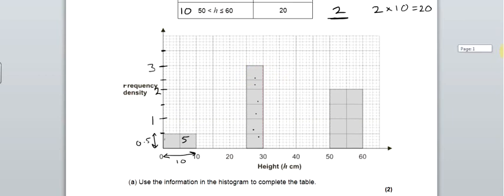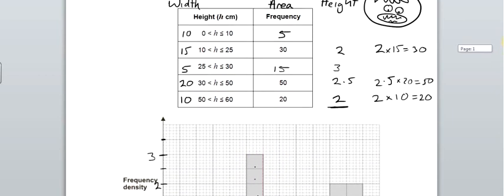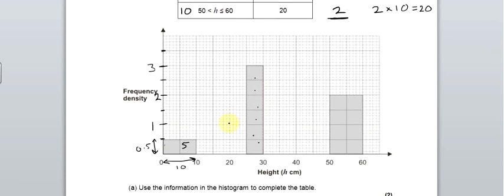Now we've got to put the missing bars in. The second bar, 10 to 25, has got a height of 2. 10 to 25 has got a height of 2. There we are. You, of course, would use a ruler. But hey, I'm not doing the exam. You are. And I don't have a ruler on this program.